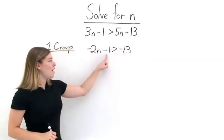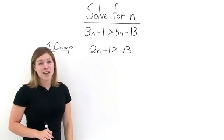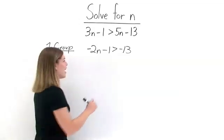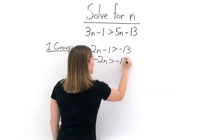Now, we want to move this negative 1 over to the right-hand side, since it does not contain an N. To do that, we add 1 to both sides. We get negative 2N is greater than negative 12.